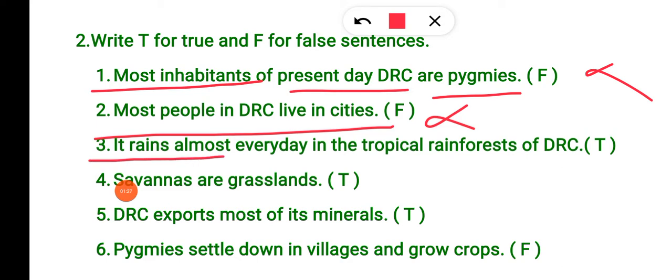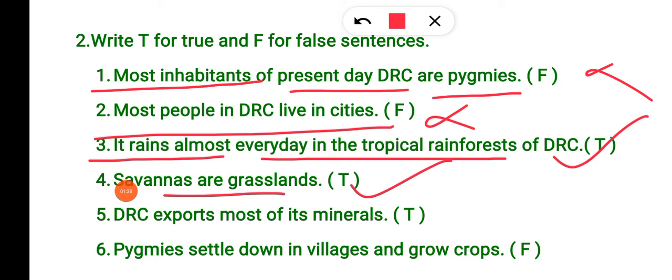It rains almost every day in tropical rainforest — true. In the equatorial forest region, daily rainfall occurs. Savanna is grassland — true. Savanna is where there are short trees and grasses.